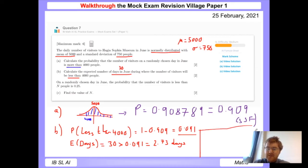This is a great normal distribution question because it covers a lot of typical topics. On a randomly chosen day in June, the probability the number of visitors is less than n people is 0.25. We need to find the value of n. This means we're working backwards. If I draw another sketch, the question is asking: if I draw a random line where this is n, I need to find such a value for n such that this shaded area is equal to 0.25. We're working backwards.